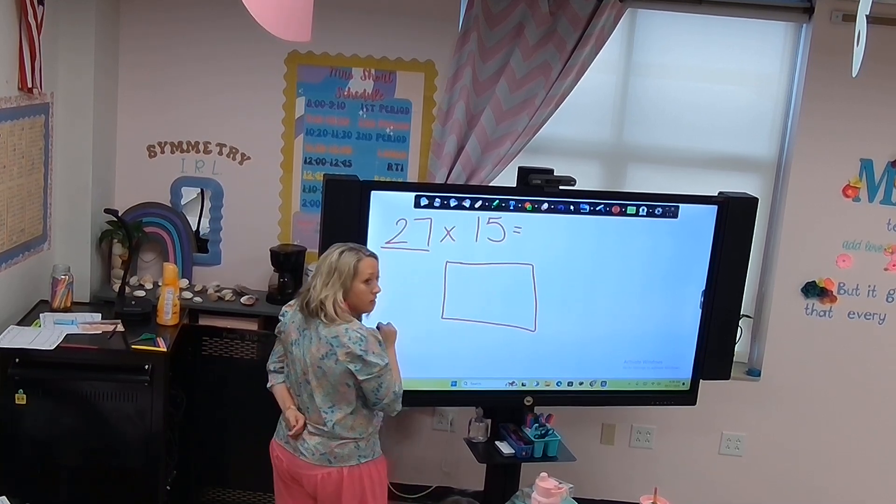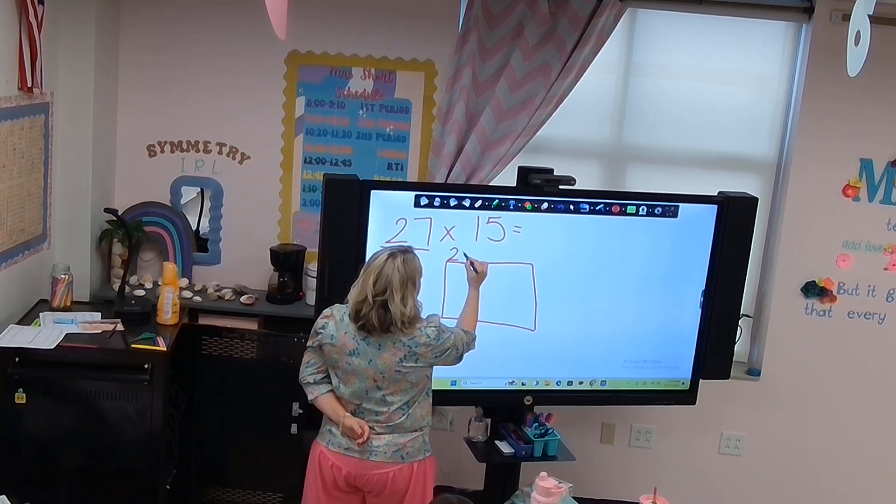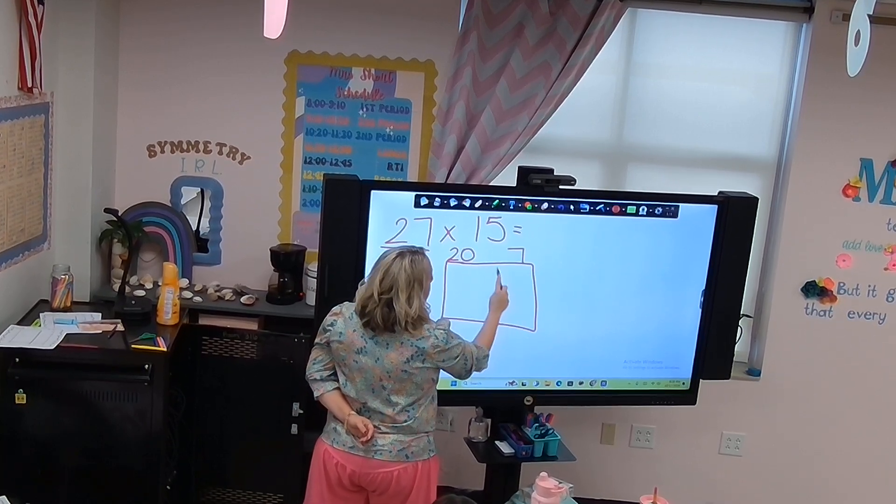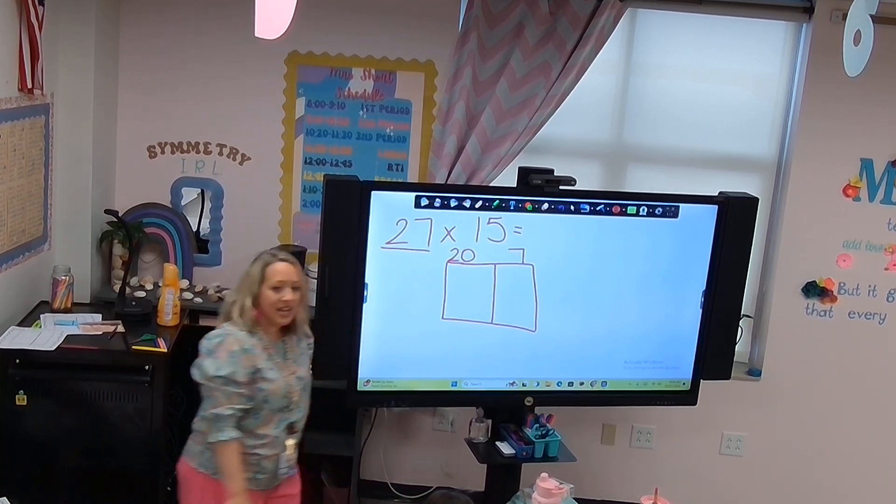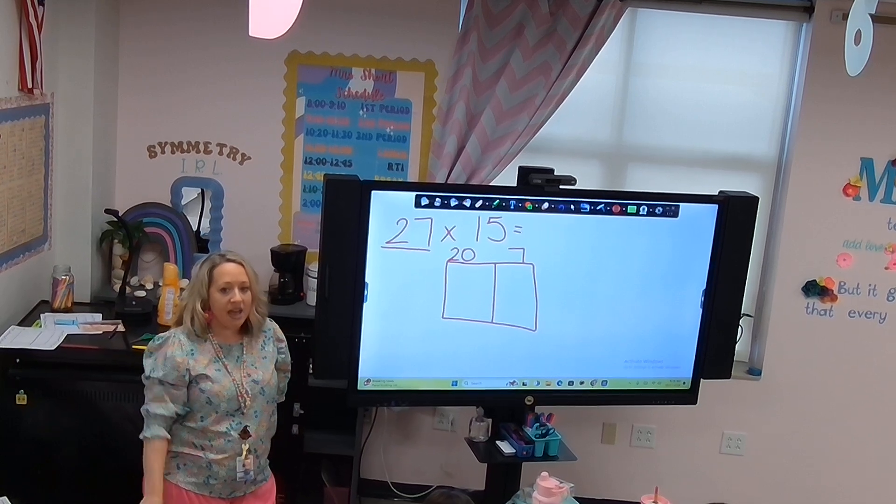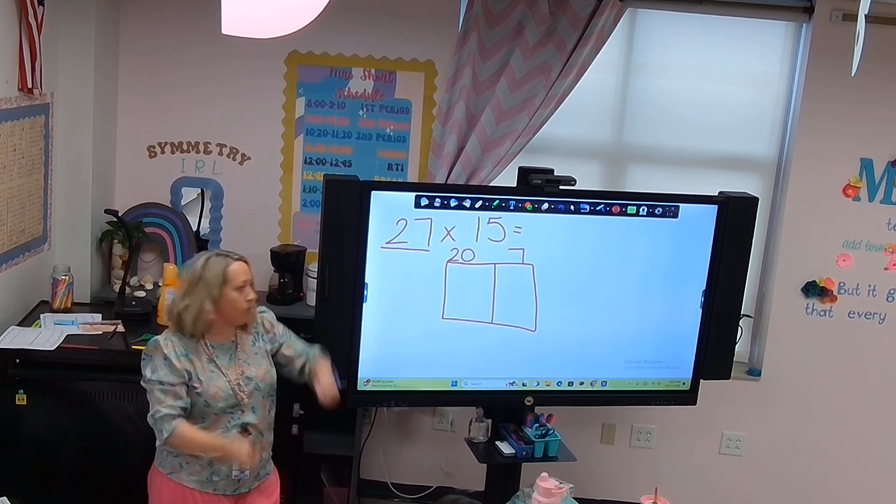Does it matter if it goes here or here? No. Because of what property? The commutative property. The commutative property tells me that I can do this either way. It doesn't matter, it's literally just turning the box sideways.